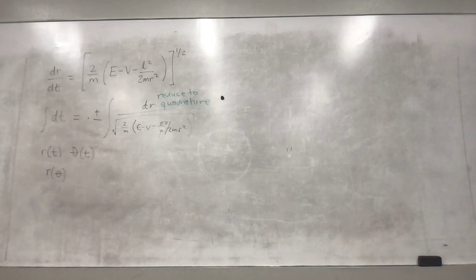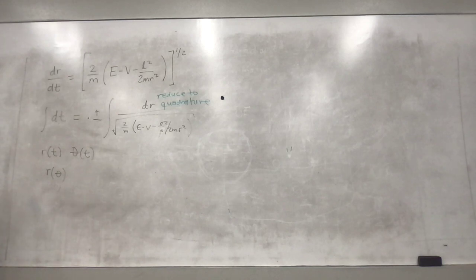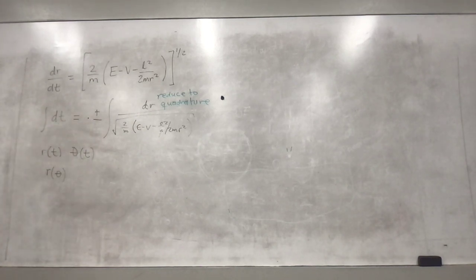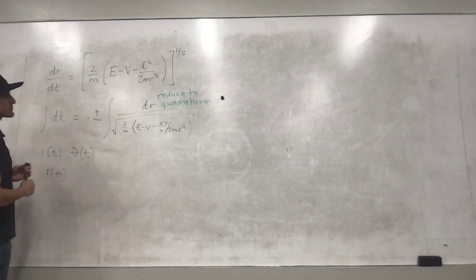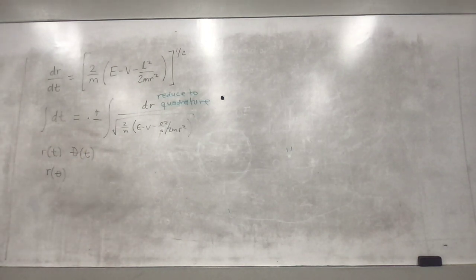Reduced to quadrature essentially means that you have almost a complete solution — you just have to solve the integral. The last step is to solve the integral, which you can sometimes do analytically. Typically you can solve it numerically. Back in the day that was not the case, but now if you get an integral you can just plug it into Mathematica or something and get a solution, even if it's numerical.